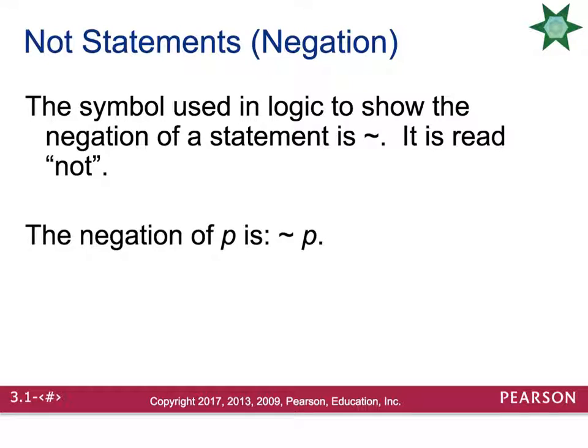The symbol for negation is the tilde (~), a little squiggle sign. Whenever you see it, you read it as 'not.' So the negation of P would be written as ~P.